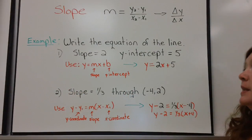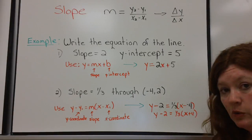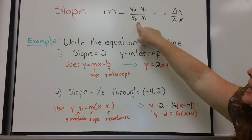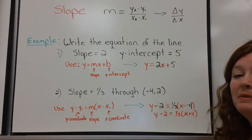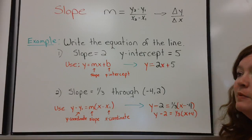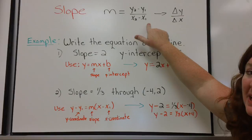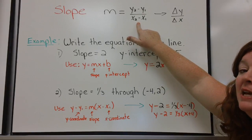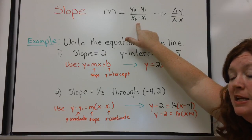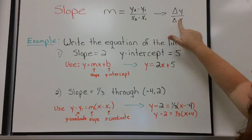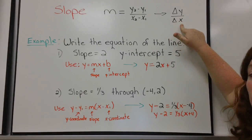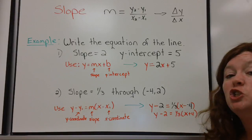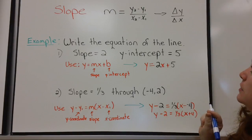We need to remember that slope is not always given to us, so we have to keep in mind this formula: m equals y2 minus y1 over x2 minus x1. It doesn't matter if those are 2s or 1s — it just means I'm going to take the two y-coordinates from my two points and subtract them, and subtract the x-coordinates in the same order. In upper-level math, you'll see this written as delta y over delta x. Delta is a Greek symbol representing change or difference in an amount.